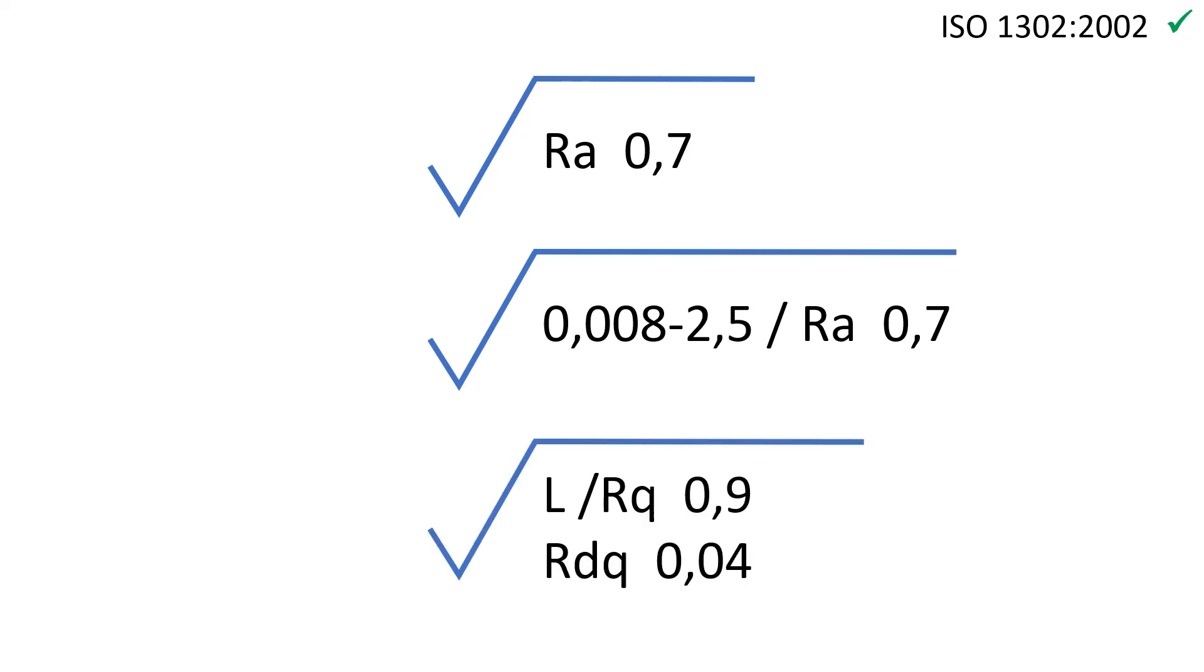The only correct place to indicate a parameter is now under the root symbol. The minimum required indications are the parameter name and the tolerance limit. Many other indications are defined by default and can be omitted. When other values are to be used that are not the default ones, they need to be explicitly written. For example, here, the filter bandwidth defines a cutoff of 8 micrometers for the Lambda S filter and a cutoff of 2.5 millimeters for the Lambda C filter.